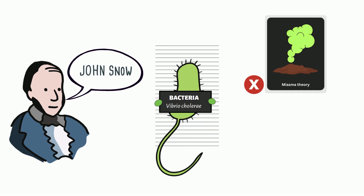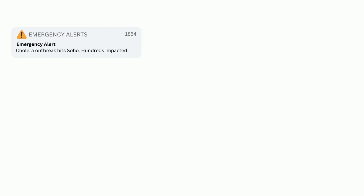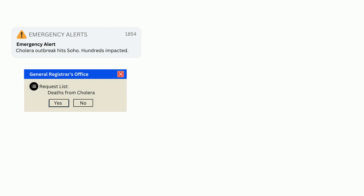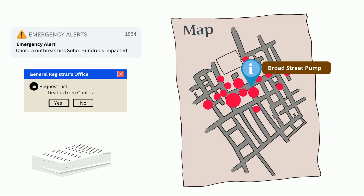Snow went against the prevailing beliefs of the time and proposed that cholera was spread by contaminated water. In 1854, Snow started investigating a large cholera outbreak in the Soho District of London, where he worked. He got a list of people who had died from cholera and analyzed where they lived. He found that they lived around a pump on Broad Street that people used for drinking water. Interestingly, he also noticed two areas in the neighborhood where people hardly got sick.